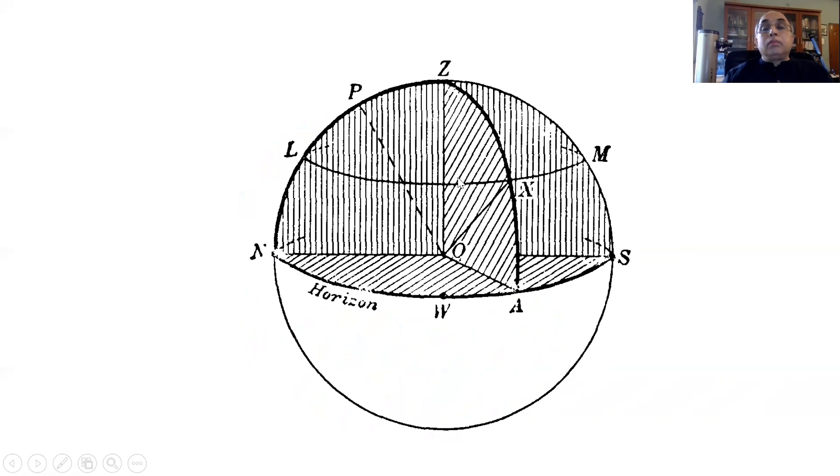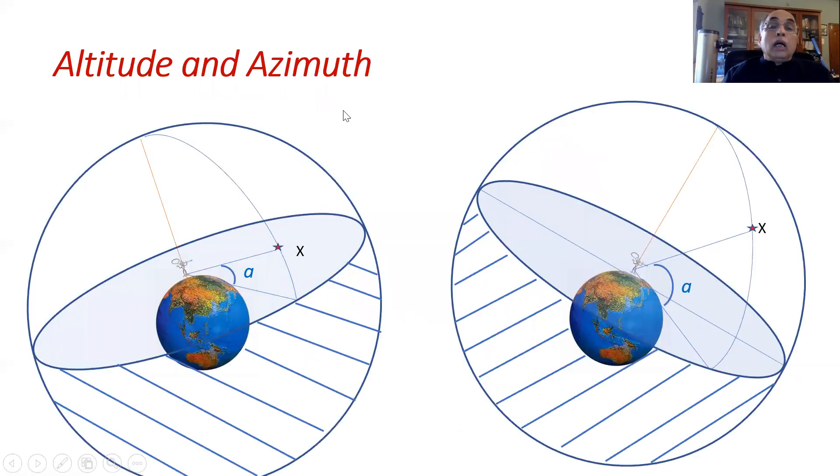Here again we are having a celestial sphere and what we notice is that all the points along the LXM arc, we have the same altitude above the horizon. The altitude will be the same for all these objects and the azimuthal angle gives the point uniquely.